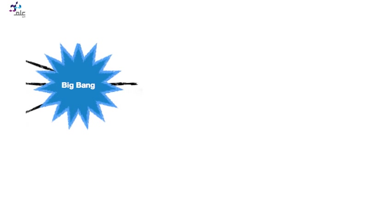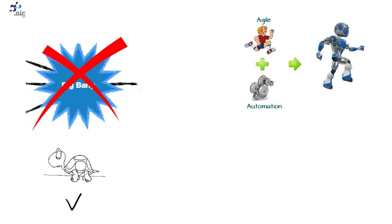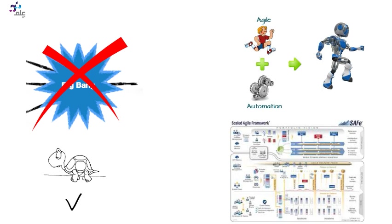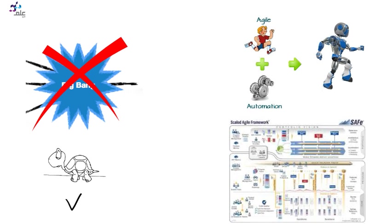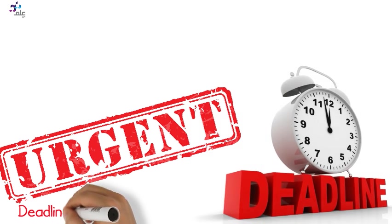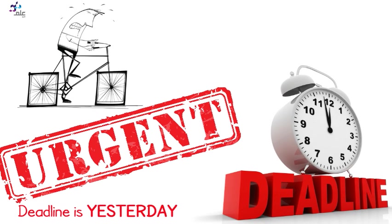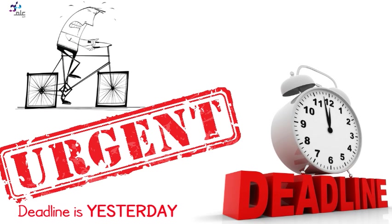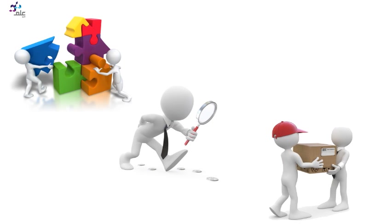This big-bang approach was accepted when life was slow and the pace allowed such slowness. Now agility is the king. Scaled agile frameworks have started to appear and are being implemented in huge and distributed organizations. Everything now is urgent — the deadline is always yesterday. It is obvious that the old style can't fit now, and we need a new way of developing, testing, and delivering our code and projects.